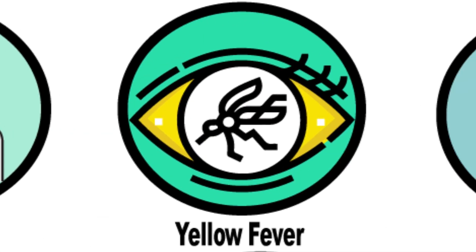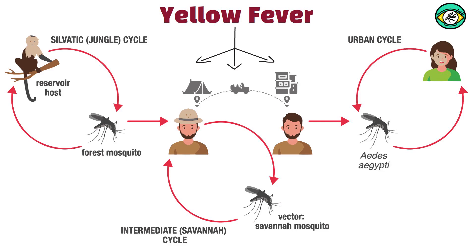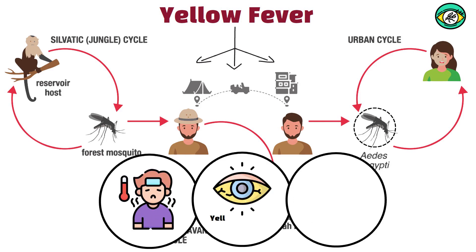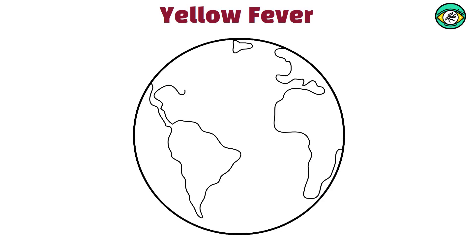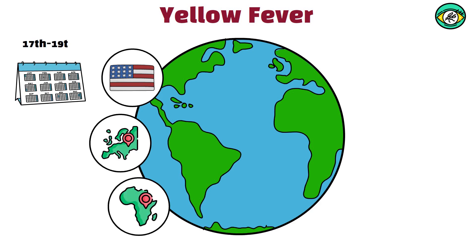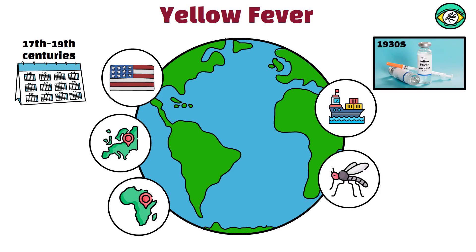Yellow fever, 17th to 19th century. Yellow fever is a viral hemorrhagic disease transmitted by infected Aedes mosquitoes. It causes high fever, jaundice, yellowing of the skin and eyes, and severe liver and kidney damage. Major outbreaks occurred in the Americas, Europe, and Africa during the 17th to 19th centuries, particularly in port cities with high mosquito populations. The development of a vaccine in the 1930s greatly reduced the incidence of yellow fever.